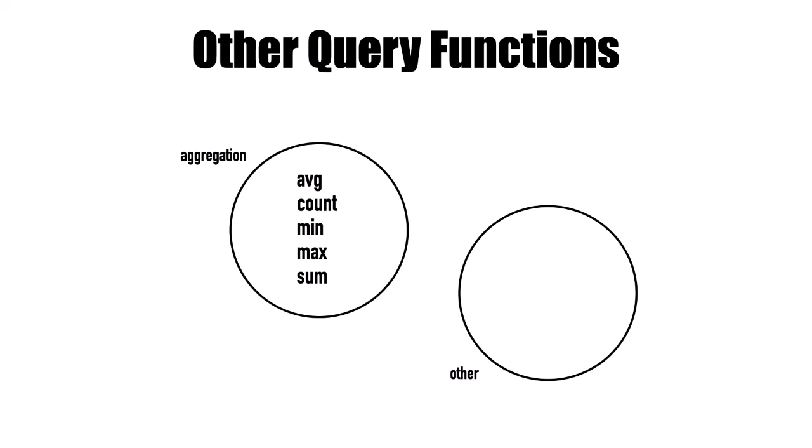Some other query functions: for aggregation, you can get average, count, min, max, and sum. Other functions include uid — for looking up by specific identifier — type — if you want to query based on a schema type — has — to query based on the presence of a predicate — groupby — which works similarly to a relational database — and val, which you need if you're creating variables and need to display or make use of those values.